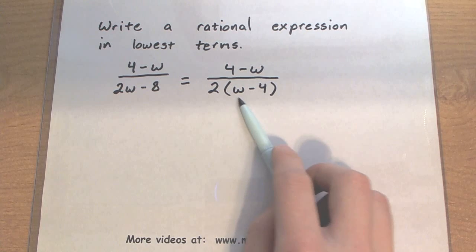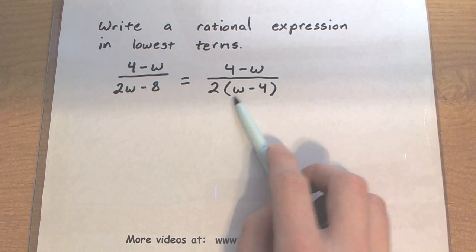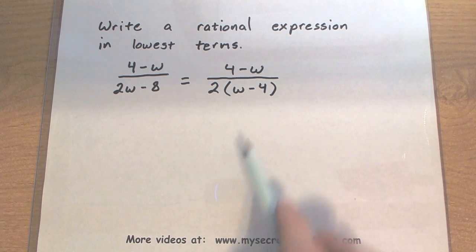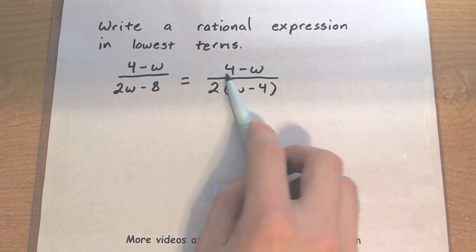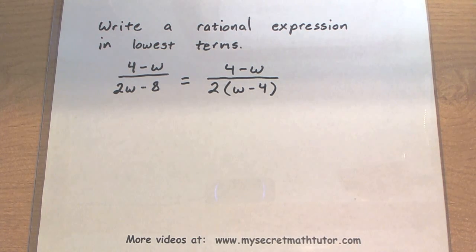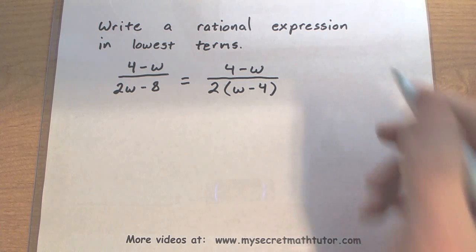One thing you want to notice is that right now my w is positive in the bottom, but it's negative up top. The 4 is negative in the bottom and positive in the top. So actually, they're almost the same, but the signs are different.